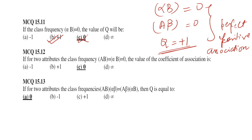If for two attribute class frequencies, AB multiplied by αβ equals 0, then the coefficient of association Q equals 0. So when either AB × αβ = 0, the coefficient of association in this case will be 0.